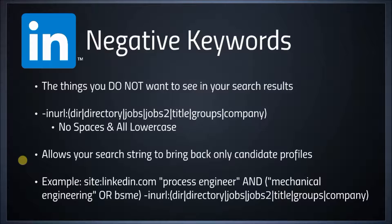In every LinkedIn X-Ray search you do, you really want to include this -inurl: line to take out all of those things, so you get only candidate profiles. So the full example looks like: site:linkedin.com "process engineer" ("mechanical engineering" OR "BSME") -inurl:(dir OR directory OR jobs OR jobs2 OR title OR groups OR company). This is going to allow you to take out all those things and come back with clean results.